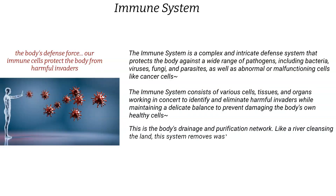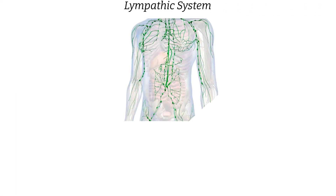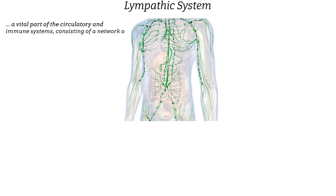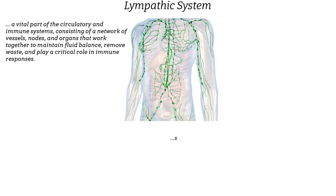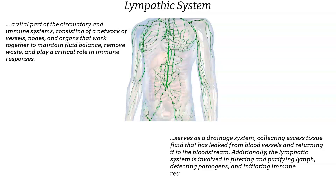Behold, the lymphatic system — the body's drainage and purification network. Like a river cleansing the land, this system removes waste and toxins, maintaining a pristine internal environment. The lymphatic system is a vital part of the circulatory and immune systems, consisting of vessels, nodes, and organs that maintain fluid balance, remove waste, filter and purify lymph, detect pathogens, and initiate immune responses.